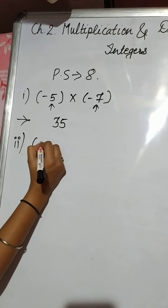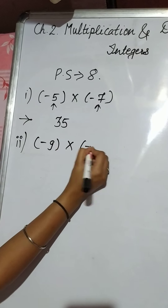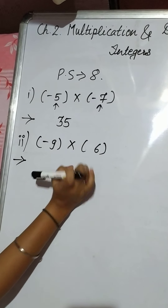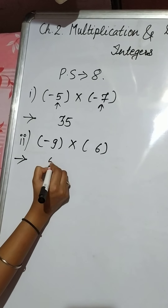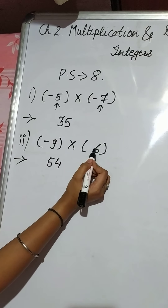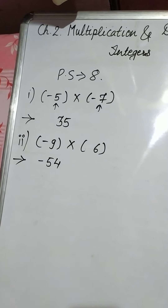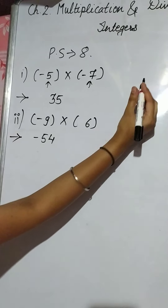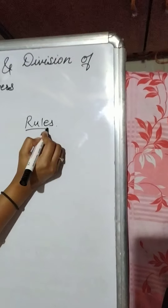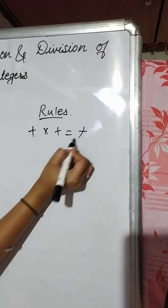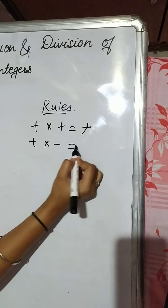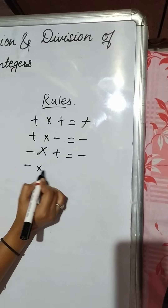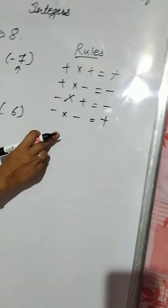Second number: minus 9 into plus 6. 9 sixes are 54. And minus plus is minus, so we give the minus sign — the answer is minus 54. To solve these sums, you should learn the rules: plus plus is plus, plus minus is minus, minus plus is minus, minus minus is plus.